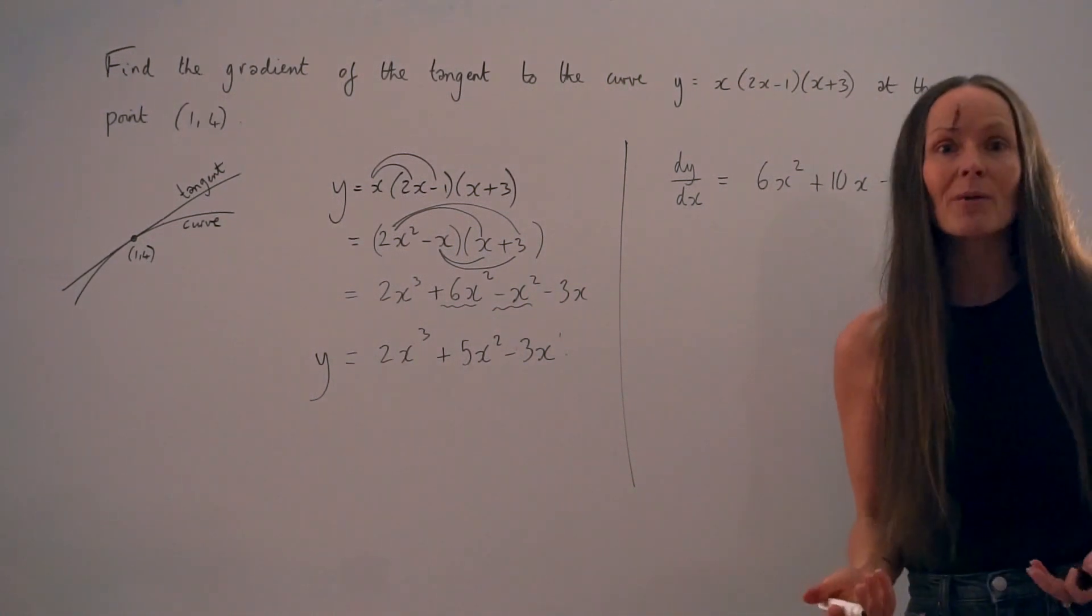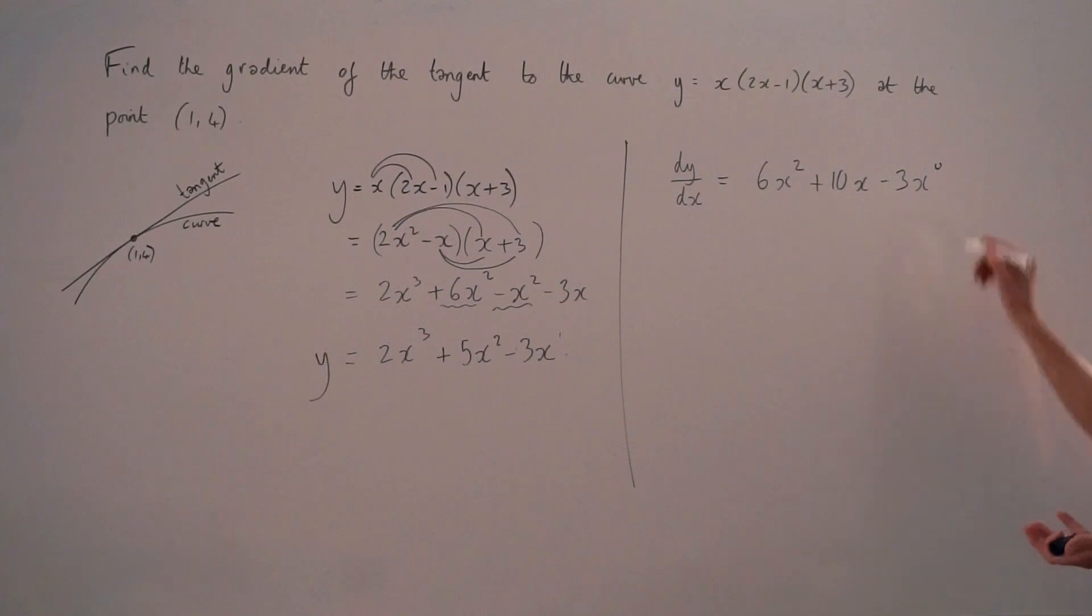Except anything to the power of 0 is equal to the number 1. So if this is equal to 1, negative 3 times 1 is just negative 3. So you can just leave it as negative 3 here.